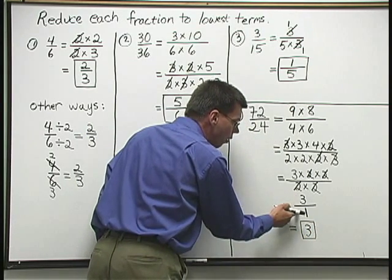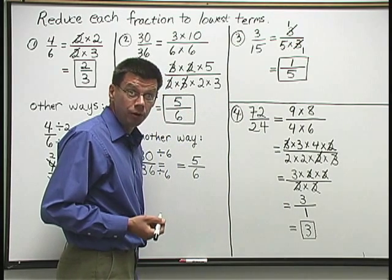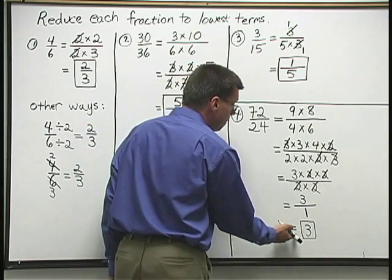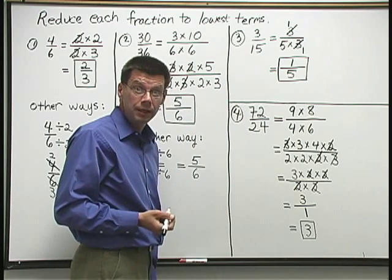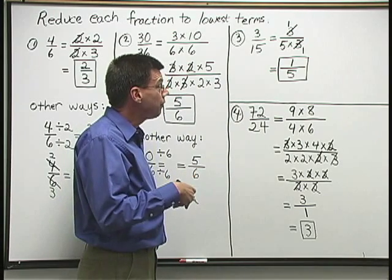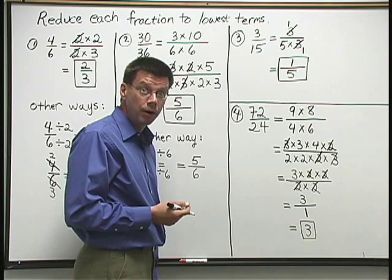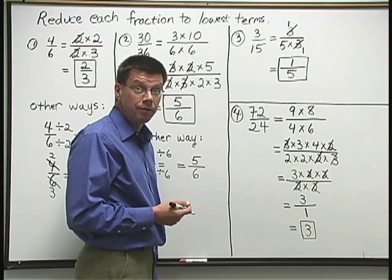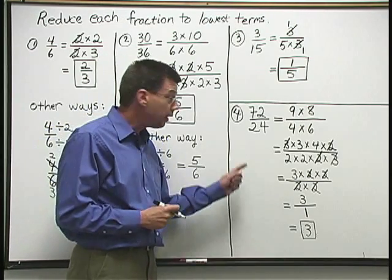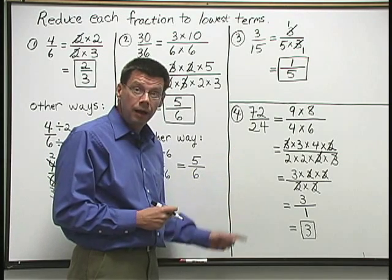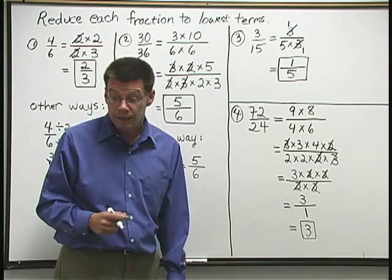When we have a number over 1, like 3 over 1, we have to drop the 1 below. That's equal to 3 here. When we have 1 over another number though, like we did in number 3, 1 over 5, we have to keep the 1. Because that's a fraction that's less than 1 whole, that's equal to 1/5. Now there's just one more thing I'd like to do here. I'd like to take another look at problem number 4. We're going to do this same problem a different way.